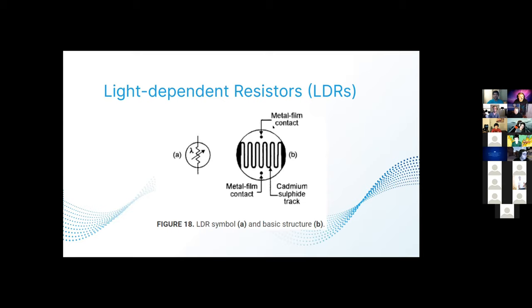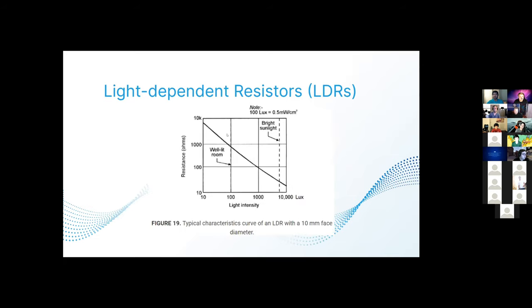These are light dependent resistors. These are passive resistance devices that vary depending on visible light intensity. This figure shows the symbol and basic structure. It consists of a pair of metal film contacts separated by this snake-like track of light sensitive cadmium sulfide. The structure is housed in a clear plastic or resin case. Here's a graph. LDRs have many practical applications in security and auto control systems. This figure shows the typical photo resistive graph that applies to an LDR with a face diameter of 10 millimeters. The resistance may be several mega ohms under dark conditions, falling to about 900 or something like that.